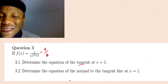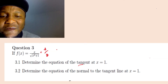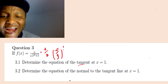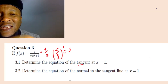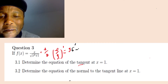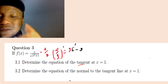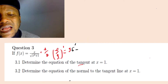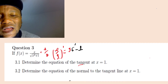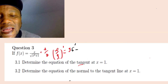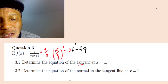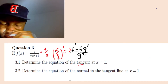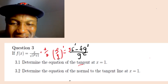To differentiate f over g, you write the denominator constant and differentiate the numerator, then reverse the process: write the numerator constant and differentiate the denominator. Then you square the denominator. So for f over g prime, you keep the denominator constant, differentiate the numerator, minus the numerator constant times the derivative of the denominator, all over the denominator squared.